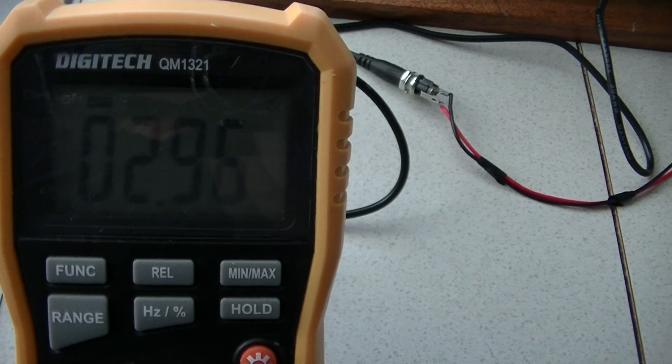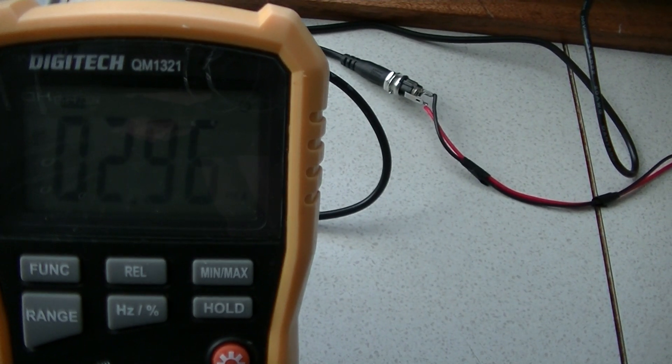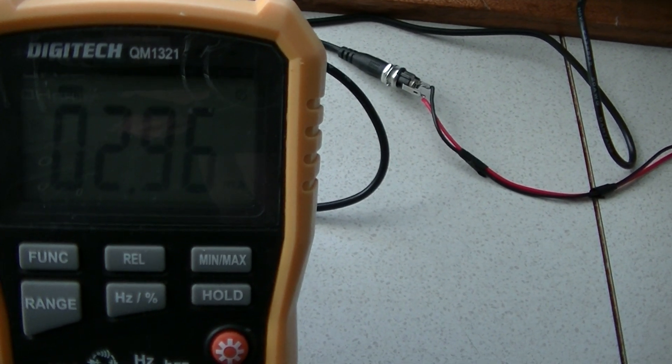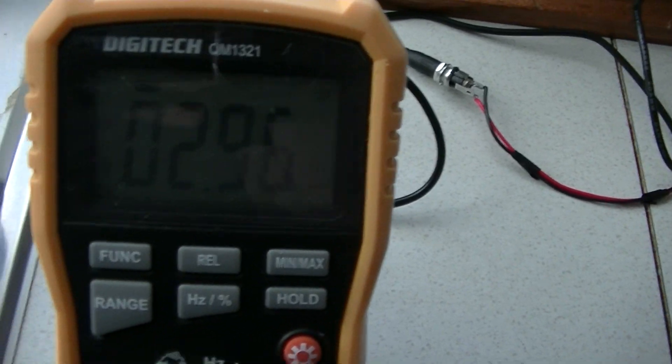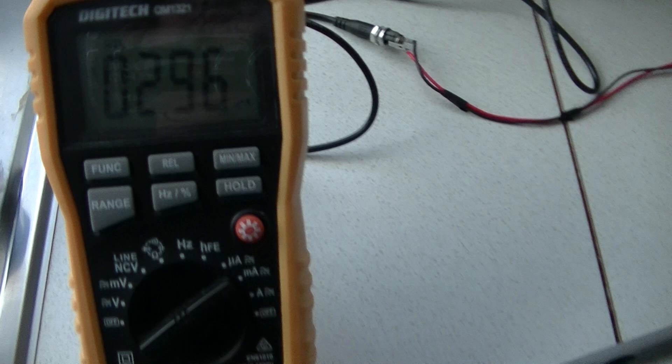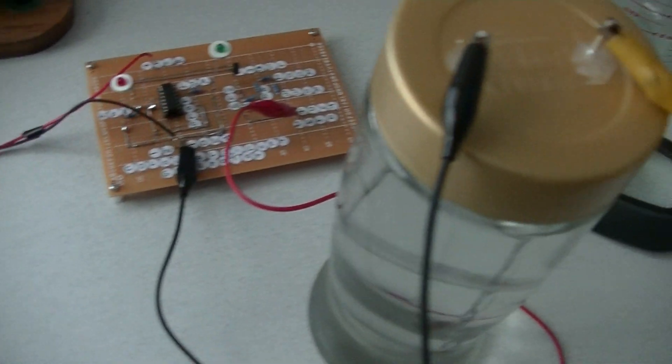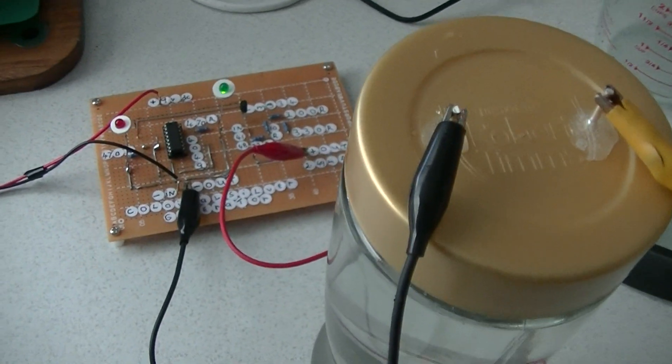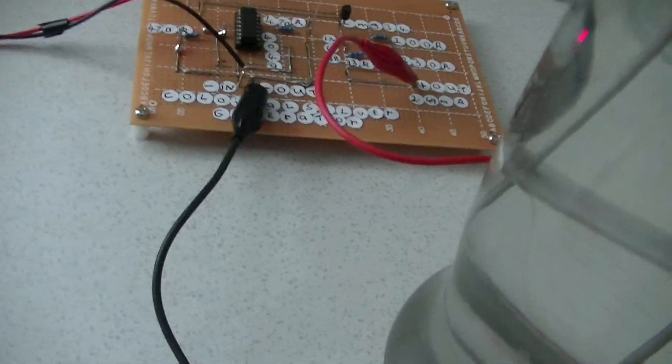I've been noticing that as the Colloidal Silver progresses, or as the brew progresses, the current draw changes, so I'm taking notice of that. That can be used as a good reference to indicate when the brew is doing good.